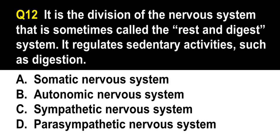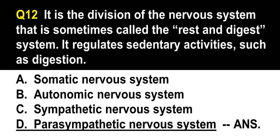Question number 12. It is a division of the nervous system sometimes called the rest and digest system, which regulates sedentary activities such as digestion. A. Somatic nervous system. B. Autonomic nervous system. C. Sympathetic nervous system. D. Parasympathetic nervous system. The correct answer is letter D. The autonomic nervous system (ANS) includes both the sympathetic and parasympathetic nervous systems. The sympathetic nervous system is activated in the fight-or-flight response. The parasympathetic nervous system is involved in conservation of energy — it slows the heart rate, increases intestinal and gland activity, and relaxes sphincter muscles in the gastrointestinal tract.